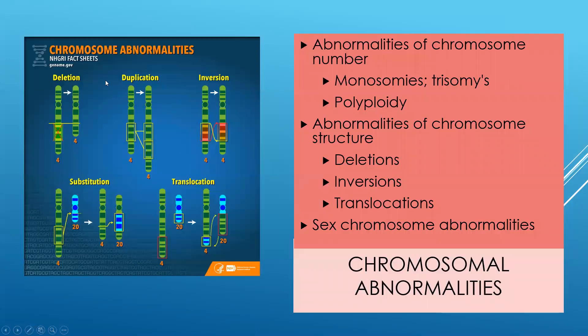There are all different things that can happen to our chromosomes because they are constantly replicating and reproducing themselves. You can get something called trisomy, where instead of having two copies of one gene you end up with three. Trisomy 21 is a very well-known disorder that babies are born with — we commonly refer to it as Down syndrome. There are other things that can happen within our genes: there can be deletions, inversions, translocations, and sex chromosome abnormalities. Part of what we are doing in gene therapy is trying to fix some of those things.